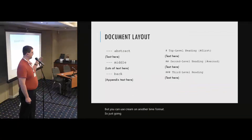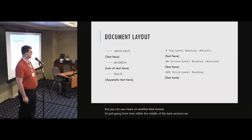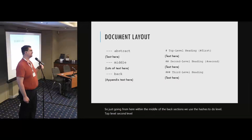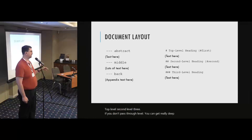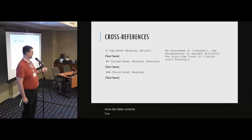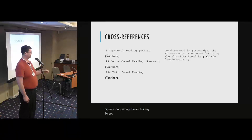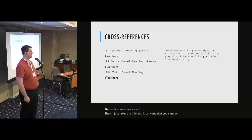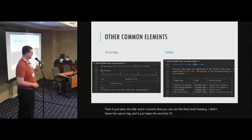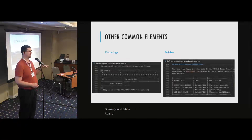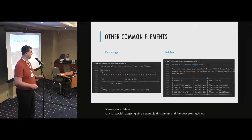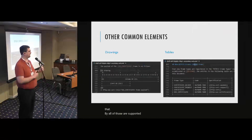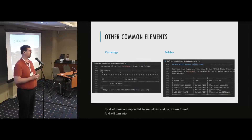Within the middle and back sections, you use hashes to do top-level, second-level, and third-level headings. If you go past third level you can get really deep, but anything below third level doesn't show in the table of contents. You can do cross-references either to sections or figures by putting the anchor tag — you indicate the anchor that was provided with the section, and if there isn't one, it just takes the title and converts that. Drawings and tables are also supported by kramdown and the Markdown format, and will turn into nice tables both in the HTML and in the text output.